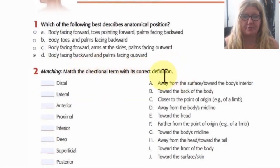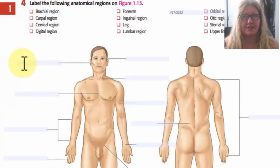Next, you'll match the directional terms with its correct definition. Again, you can type in the boxes provided. Many of these worksheets will include pictures and images that you must label. You can just label by hovering your cursor over one of the boxes and simply typing.